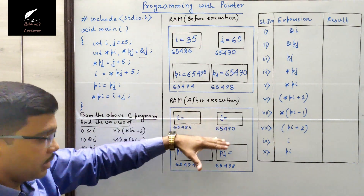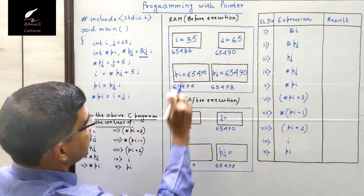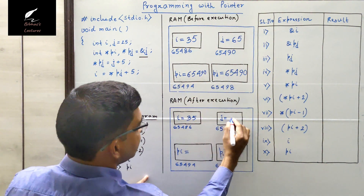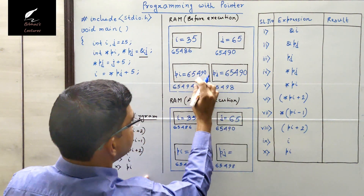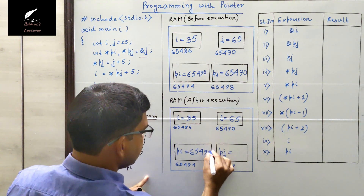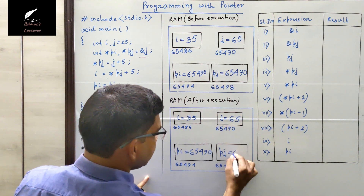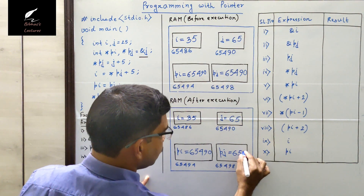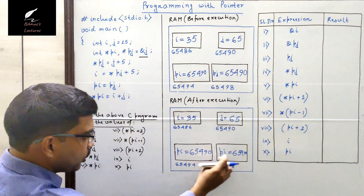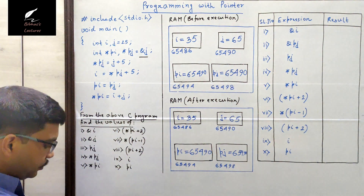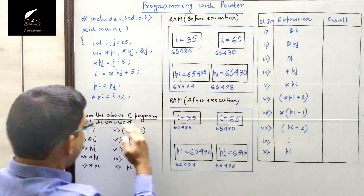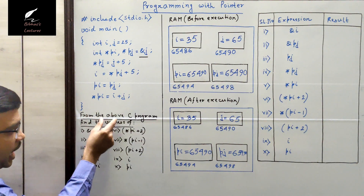This is the pictorial representation of the RAM after execution. I am updating all the values: i is now 35, the value at j's location is now 65, pi is 65490, and pj is also 65490. Both pi and pj point to the same address.